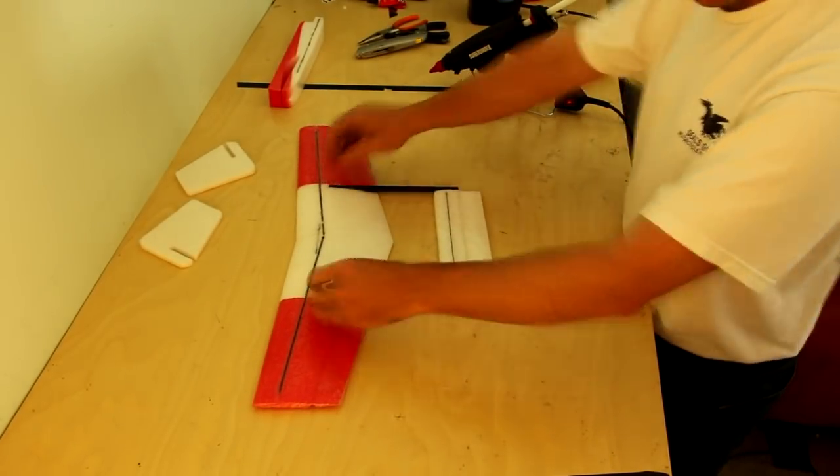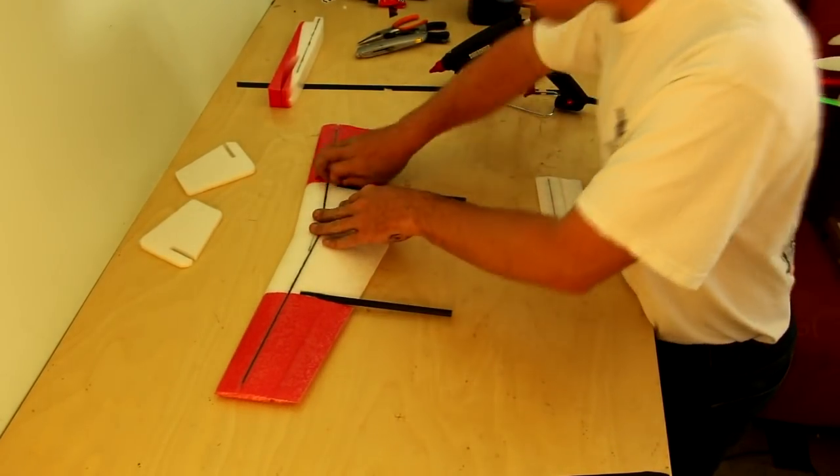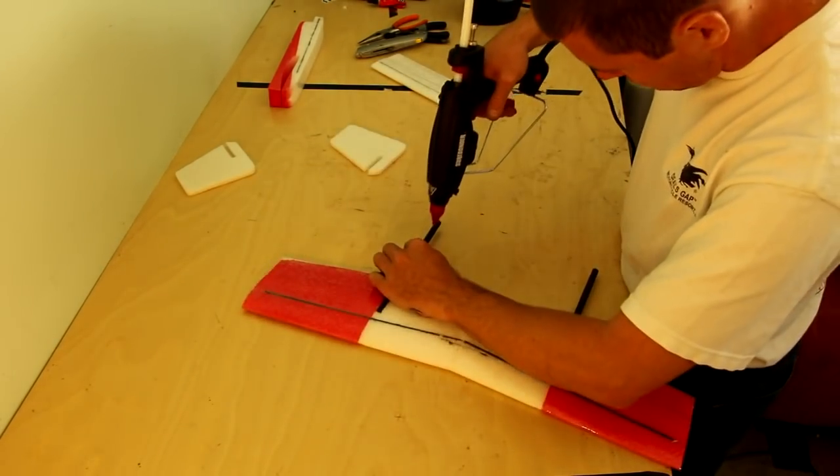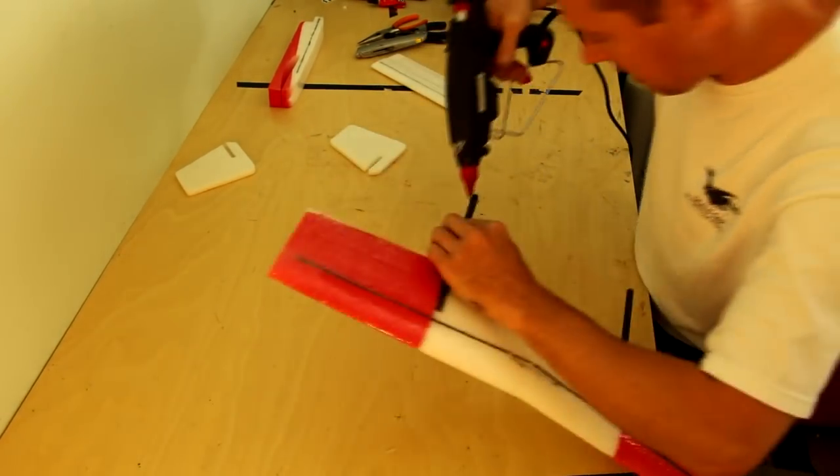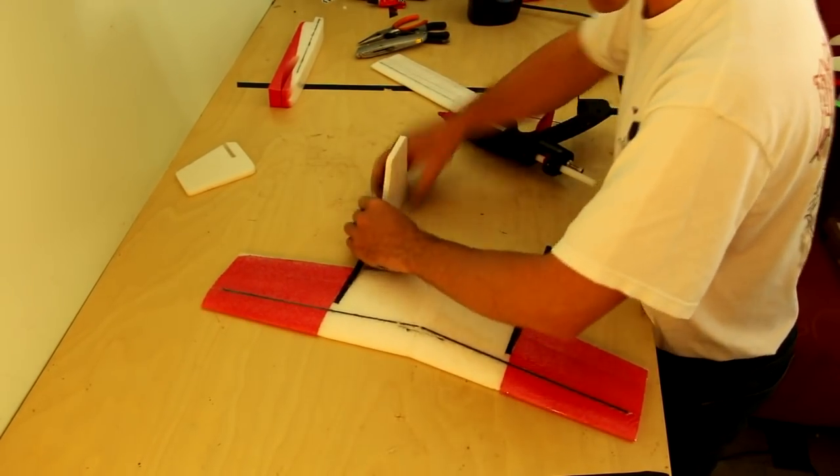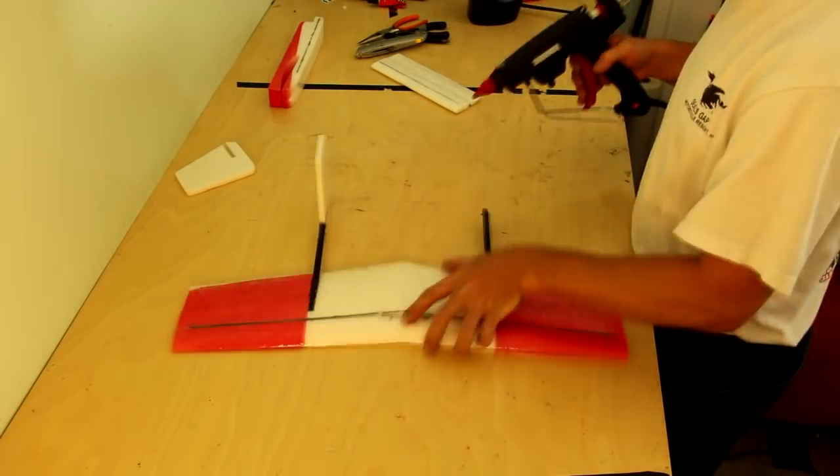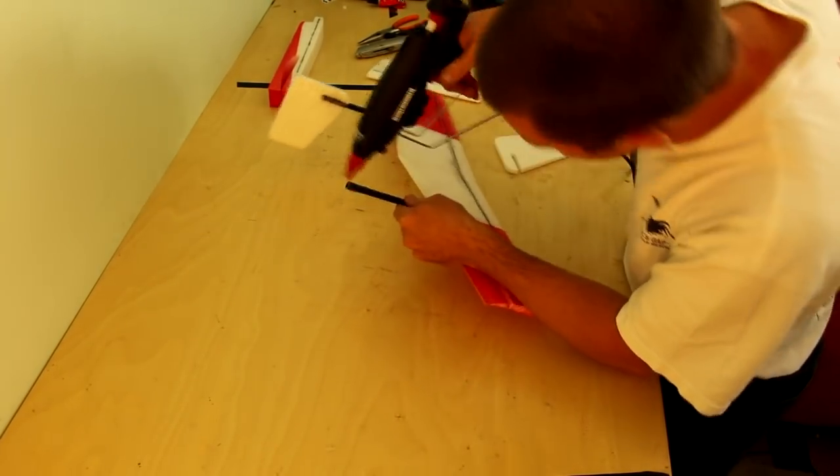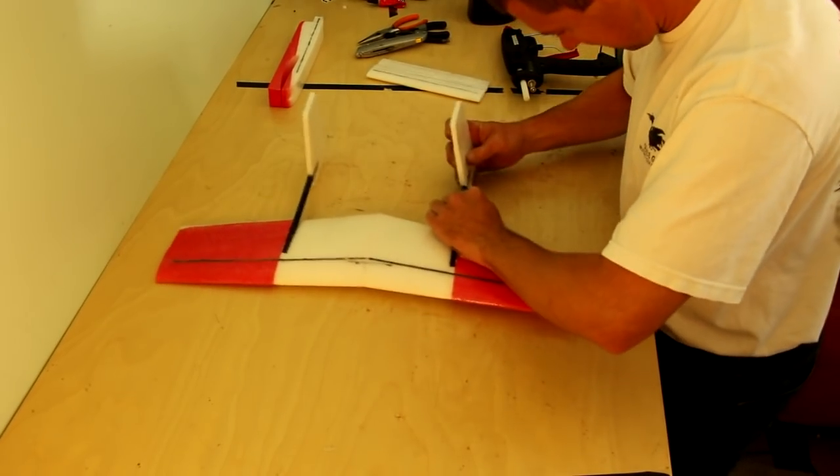Then go ahead and install the vertical stabilizers. These again are just glued in. You want the boom all the way in the back of the vertical stabilizers. You'll want to use a square or something just to be sure they're vertical or you can just use the tail but they have to be straight up and down otherwise the tail won't fit in properly.